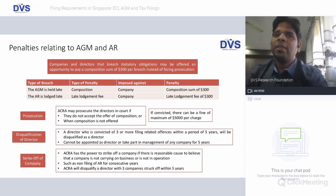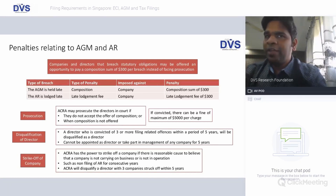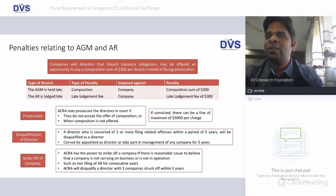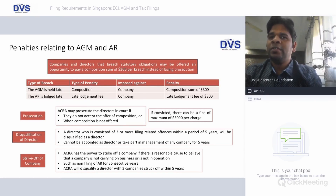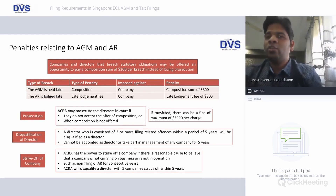Companies or directors can be prosecuted if they do not accept the offer of composition or when composition is not offered at all. If convicted, there can be a fine of a maximum of S$500 per charge on the local director. A director convicted of more than three filing-related offenses within five years faces disqualification — they cannot be appointed as a director of any company for the next five years. If ACRA has reason to believe a company is not carrying on its intended business, or due to non-filing of AR for consecutive years, ACRA will disqualify the director and strike off the company from the ACRA register, effectively liquidating it by force.